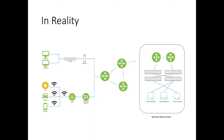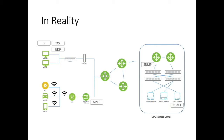Just to name a few, we have the widely used TCP/IP and UDP, MME for mobile management, SNMP and RDMA widely used in data centers, and many other services in the network such as NTP, BGP, and DNS.